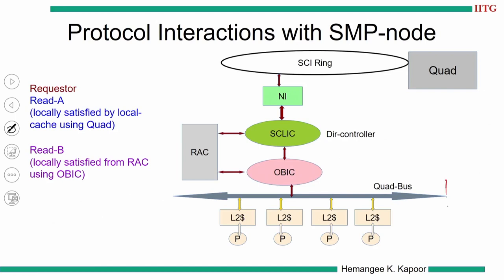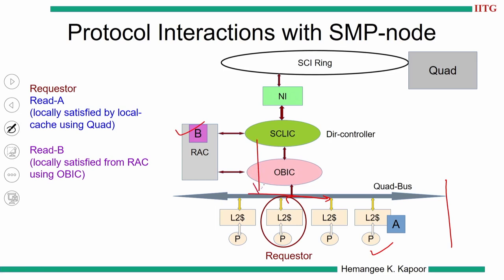In the example: we have the quad with four processors, caches, and a directory controller going outside to the SCI ring. Suppose processor requests block A, which is present with another processor within the quad — when the snoop request goes onto the quad bus, the fourth processor responds and gives the data block to the requester. In case the requester wants block B sitting in the RSE, the directory controller sees the snoop request and supplies block B to the requester.